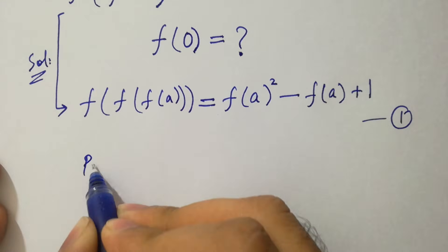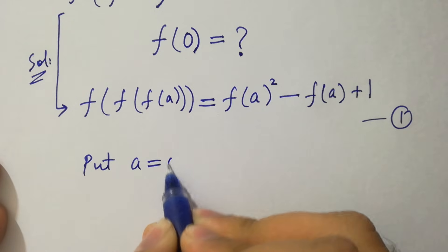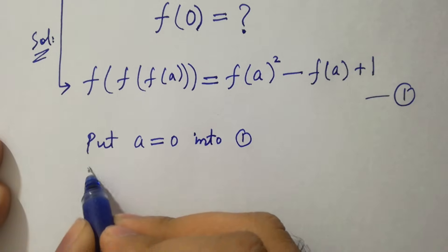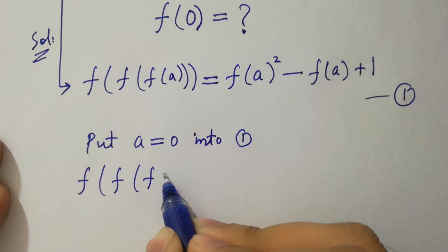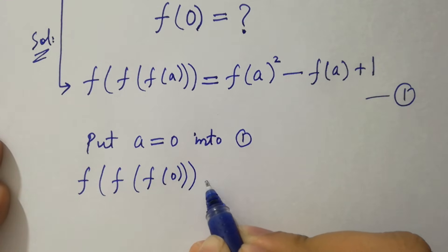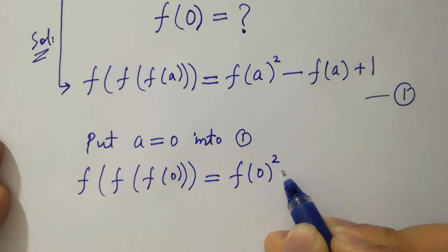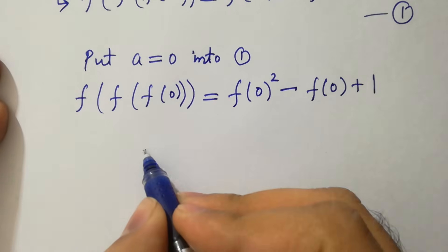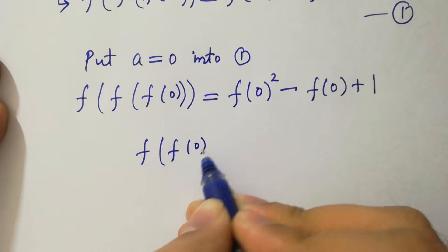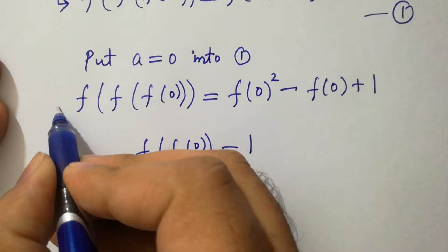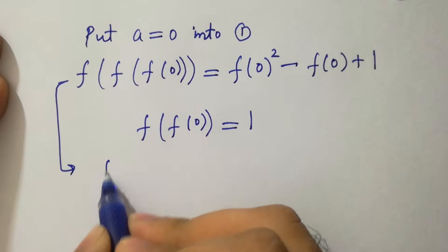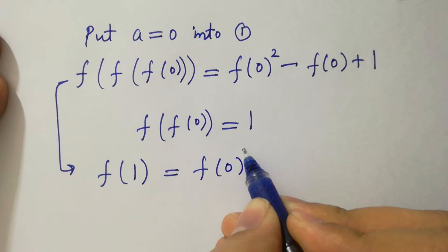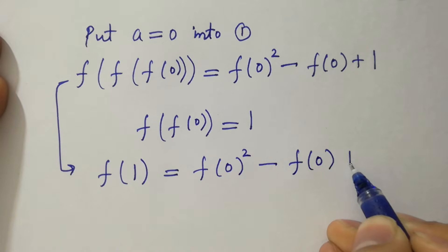Put a equal to 0 into the first equation. We have f of f of f of 0 equal to f of 0 squared minus f of 0 plus 1. Since f of f of 0 equals 1, it will be 1 equal to f of 0 squared minus f of 0 plus 1.